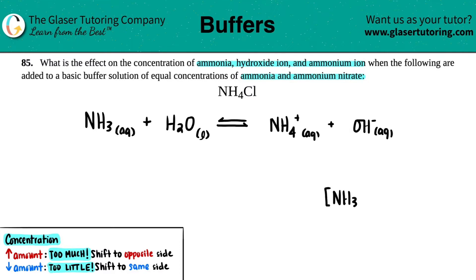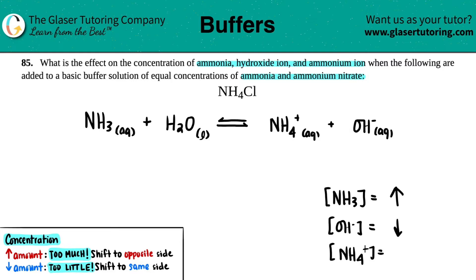So I'm going to write that out. NH3 is ammonia, that's over here. The hydroxide is OH-, that's one of the products. And then the ammonium is NH4+. They're just asking what's happening — are these going to increase in concentration, decrease in concentration, or have no effect? This comes from what we're adding, in this case NH4Cl.